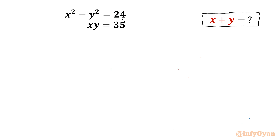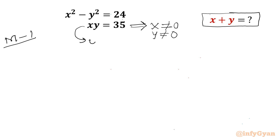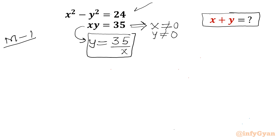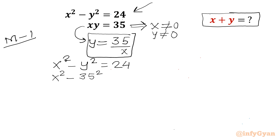Let's get started with method number 1. From the second equation I can conclude x cannot be 0 and y also cannot be 0. So from this equation I can write y equals 35 over x, and I will apply this value in equation 1: x squared minus 35 squared over x squared equals 24.